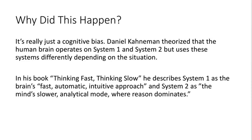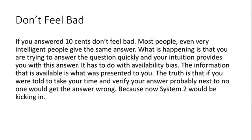So the question is, why did this happen? It's really just a cognitive bias. Daniel Kahneman theorized that the human brain operates on System 1 and System 2, but uses these systems differently depending upon the situation. In his book Thinking Fast, Thinking Slow — which I highly recommend — he describes System 1 as the brain's fast, automatic, intuitive approach, and System 2 as the mind's slower, analytical mode where reason dominates. Don't feel bad if you answered $0.10; most people, even very intelligent people, give the same answer. What's happening is you're trying to answer quickly, and your intuition provides this answer. It has to do with availability bias — the information that's available is what was presented to you. If you were told to take your time and verify your answer, probably next to no one would get it wrong, because System 2 would be kicking in.